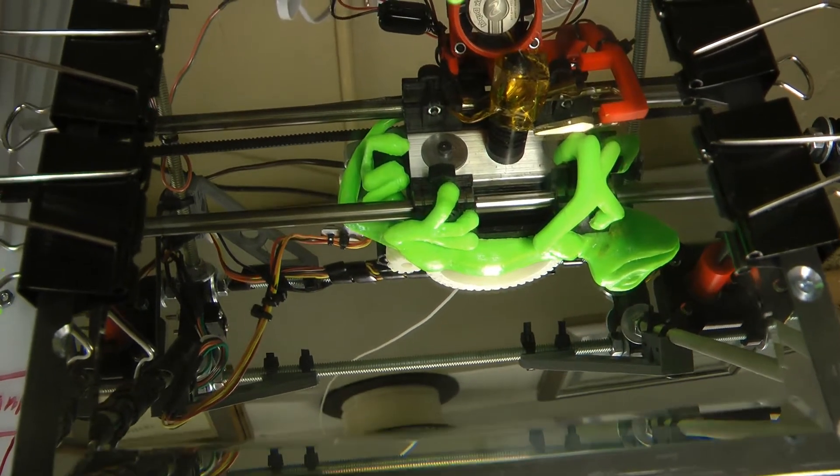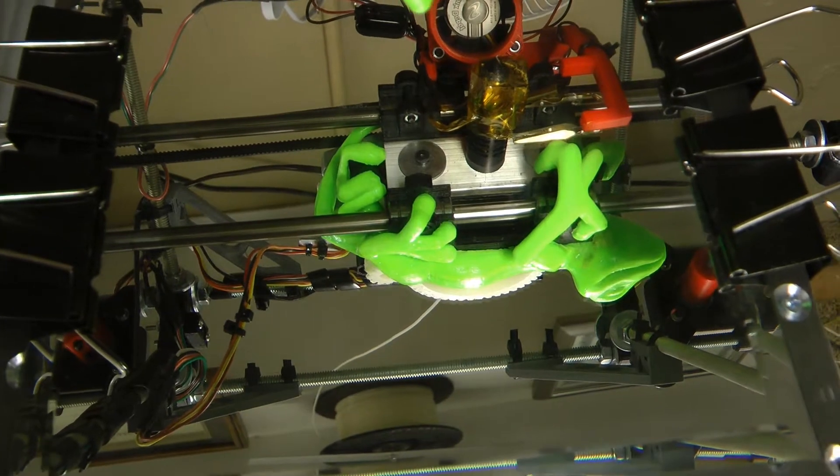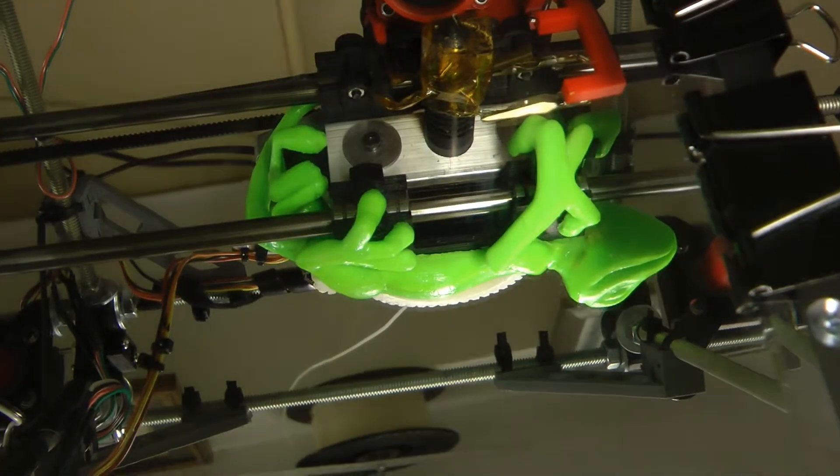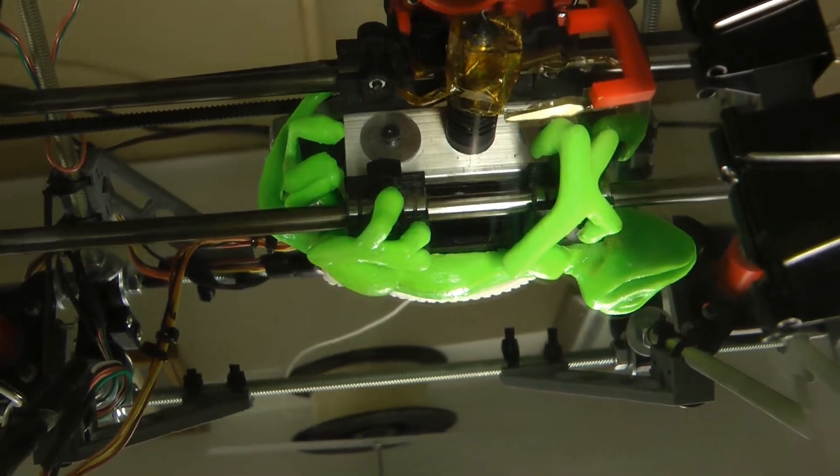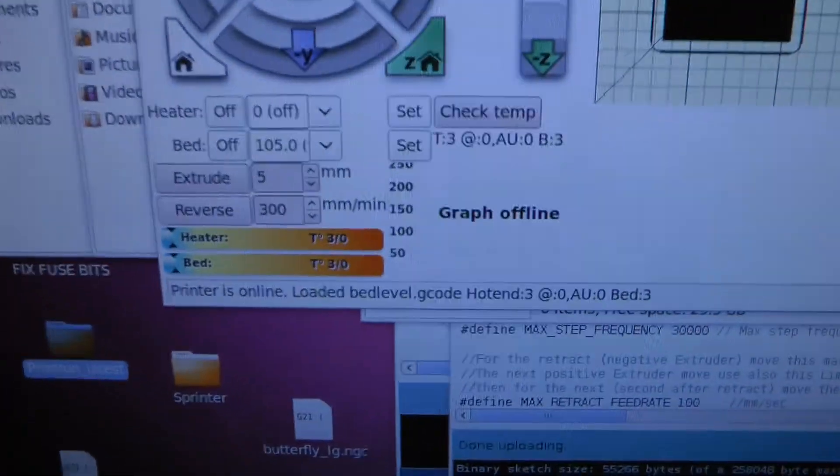Now, anytime that you're using mains current, safety should be upmost first because mains current is, of course, 110 volts. I'll hold off talking for a second. What I'm going to do is go over here. Now, you can see the system. It is at 3 degrees right now.